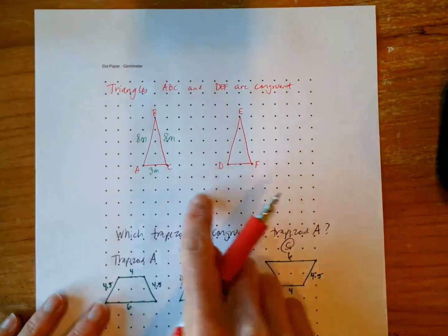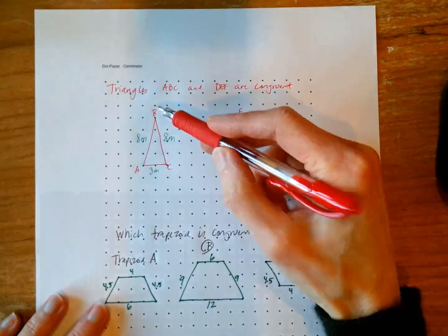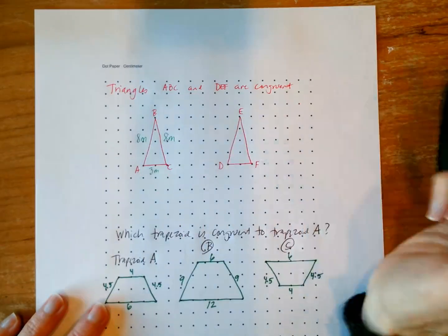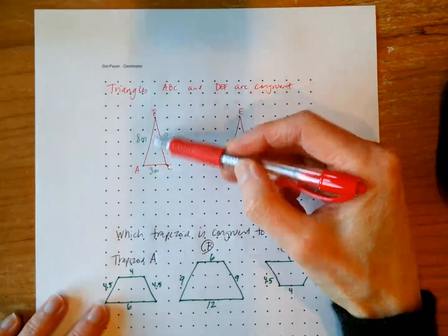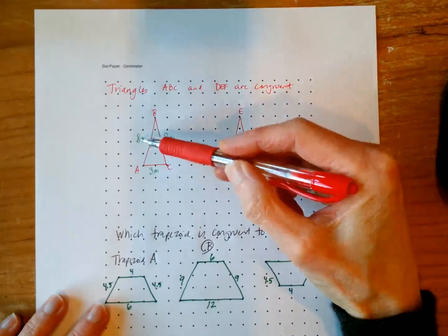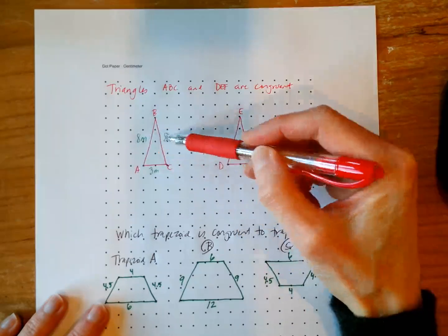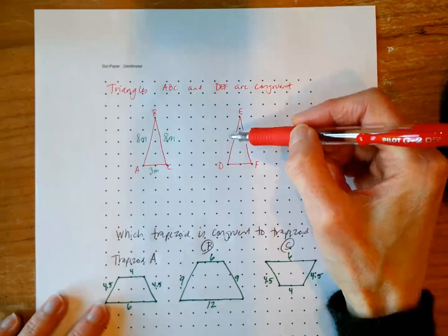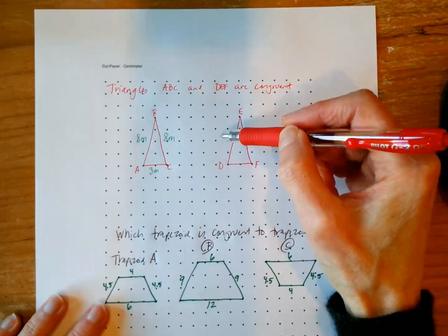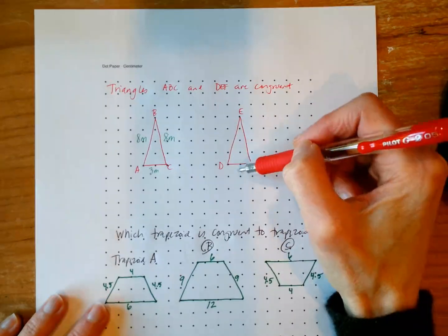So these triangles ABC and DEF are congruent. If we know that the side angles here of triangle ABC are both eight meters and the base is three meters, we also know that that information is true for the other triangle, eight meters, eight meters, and three meters.